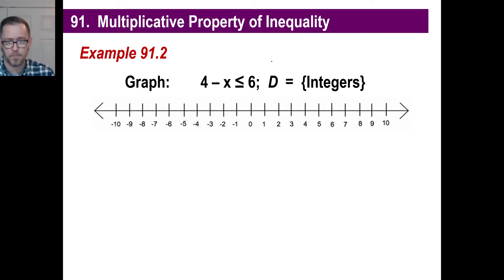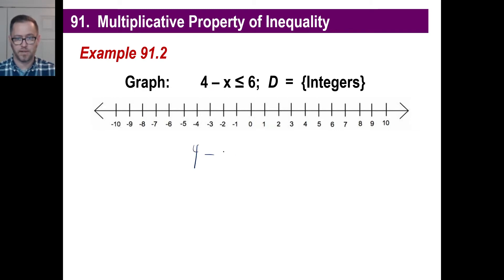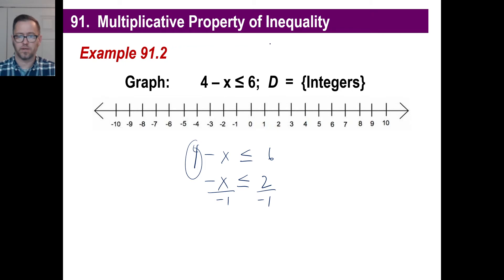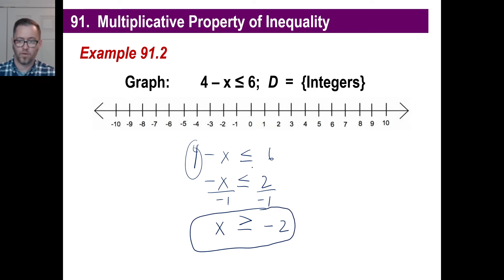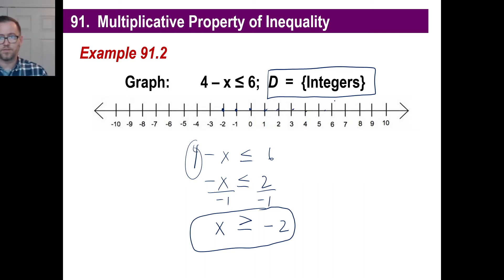This one looks a little more complicated, but again, you treat inequalities exactly how you would an equation. We have 4 minus x less than or equal to 6. Moving the 4 over, we get negative x less than or equal to 2. We don't want negative x, so we divide both sides by negative 1 and flip the sign. We get x greater than or equal to negative 2. The domain is only integers, so we graph negative 2 and mark each integer to the right.